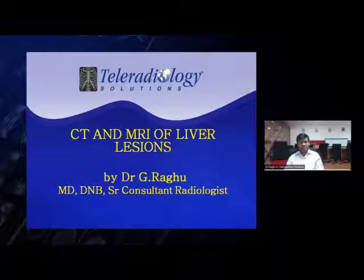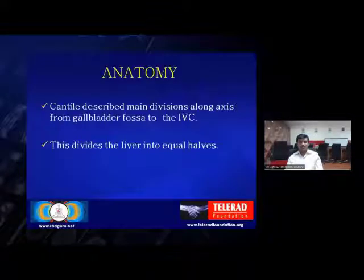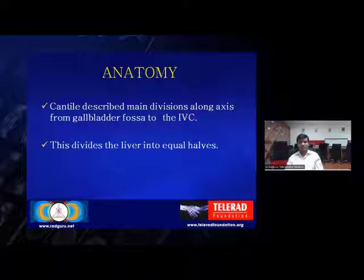Hello everyone, today I will be talking on CT and MRI liver lesions. Initially the anatomy — the classic anatomy. The liver is divided by Cantlie's line into two main divisions, right and left, across a line running from the gallbladder fossa anteriorly to the inferior vena cava posteriorly. This divides the liver into equal halves.